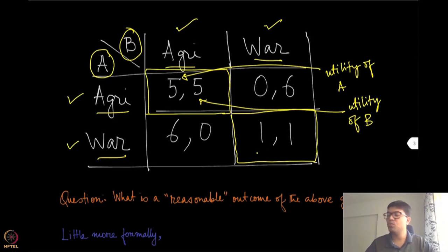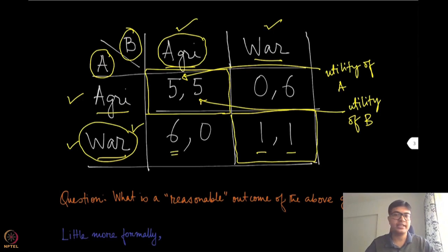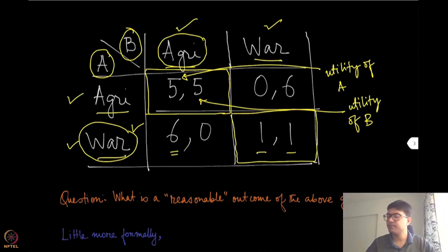Now imagine the situation where one kingdom — say kingdom A — is investing in war and the other is investing in agriculture. In that situation, the kingdom choosing war will go and attack the other, gaining not only their agricultural produce but also their wealth, land, and other things — possibly getting a payoff higher than from choosing agriculture alone. On the other hand, the second player will get zero payoff, as they were not able to defend themselves and have lost their agricultural produce.